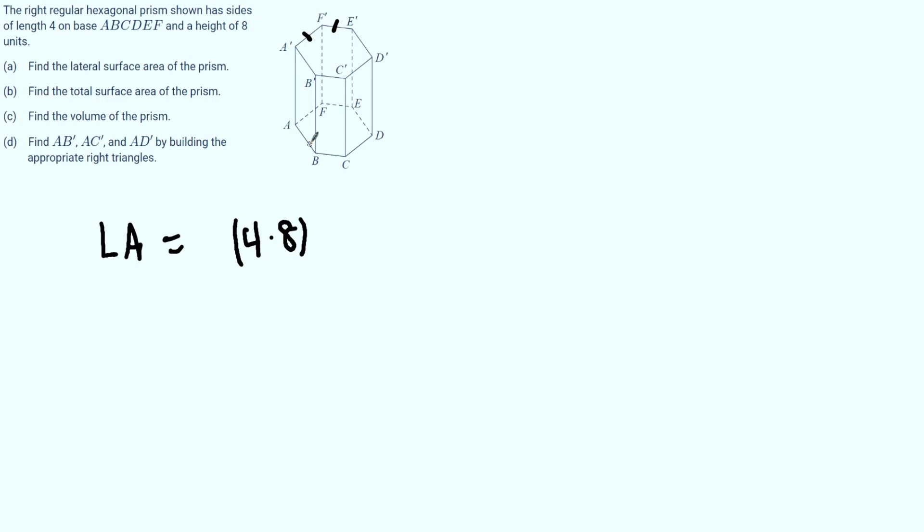Now because it's a hexagon that means in total there are 6 rectangles. So our total calculation is going to be 4 times 8 which is the area of an individual rectangle.